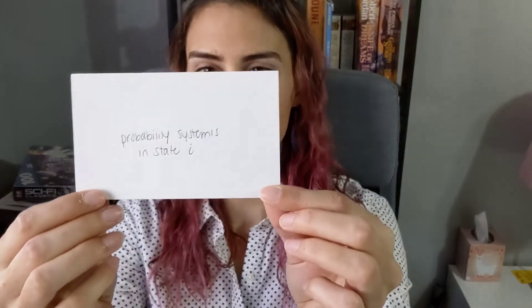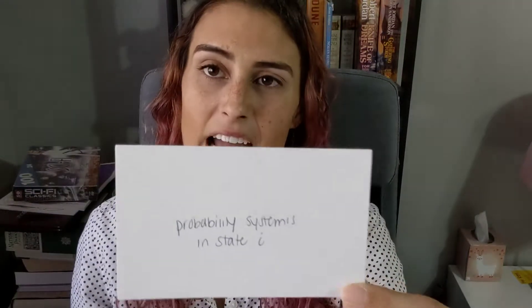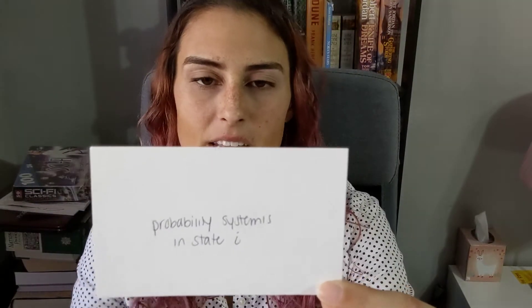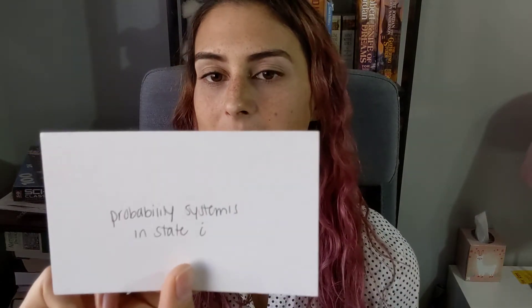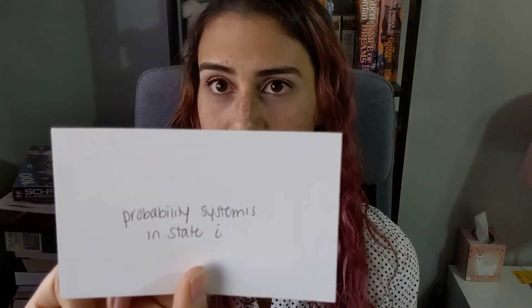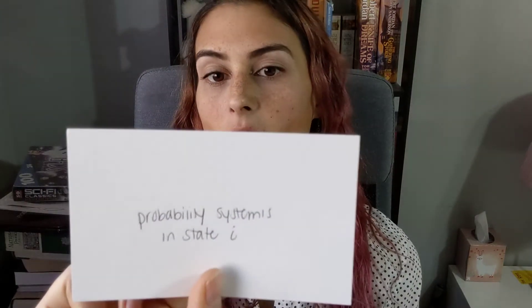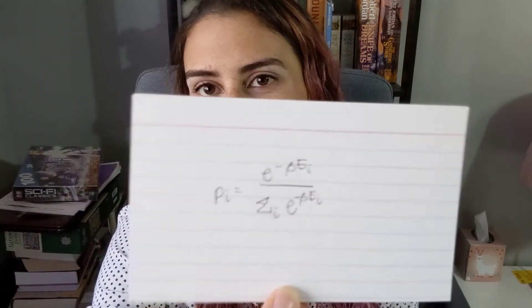The probability that a system is in state i, P sub i, is given by e to the minus beta E sub i, over the sum of e to the minus beta E sub i over all i.